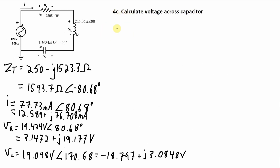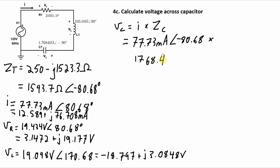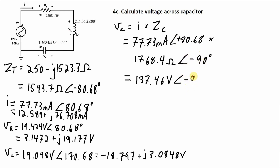The final step is to calculate the voltage across the capacitor: current times the impedance of the capacitor. Multiplying the magnitudes and adding the phase angles — 80.68 plus −90 — gives −9.32 degrees. I will convert this to rectangular coordinates just like I did for the other voltages.